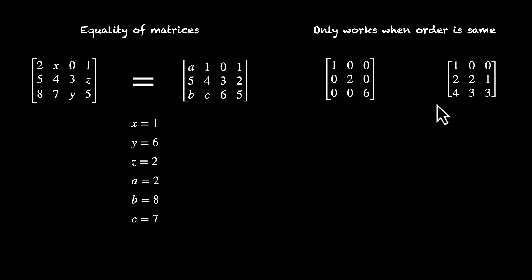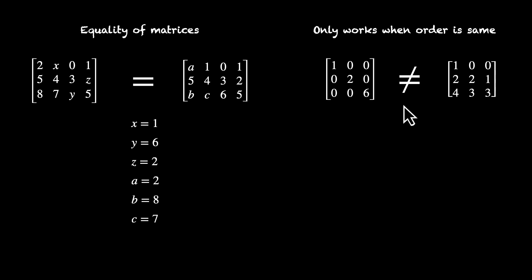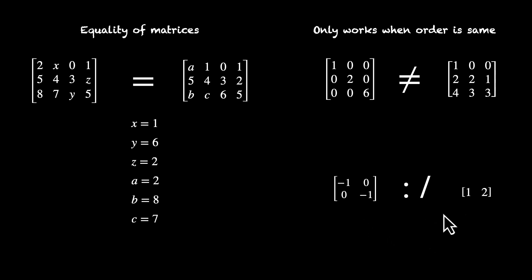For example, let's compare these two matrices. Are they equal or are they not equal? First let's check the order. This is a square matrix, 3 by 3. This is also a square matrix, 3 by 3, so yes, we can compare them. But are they equal? 1 0 0, 1 0 0, 0 2 0, 2 2 1 — if even a single element is not equal, we'll say that these two matrices are not equal. Can we compare these two? No — here the order is 2 by 2, here the order is 2 by 1. We can't compare them; comparison doesn't make sense in this case.